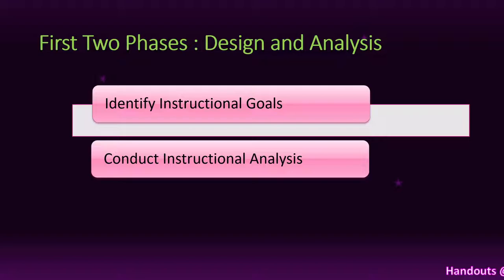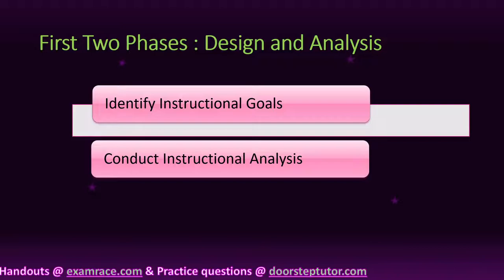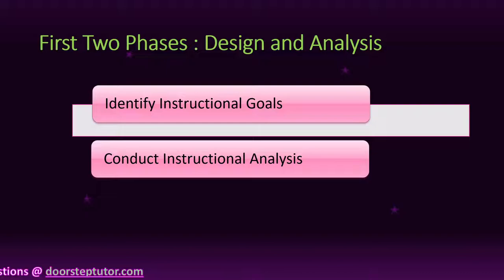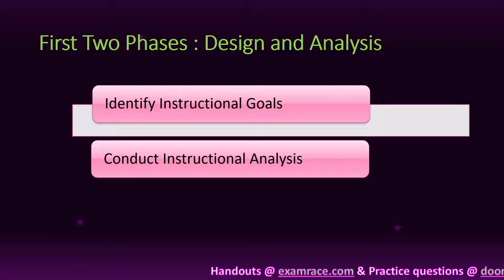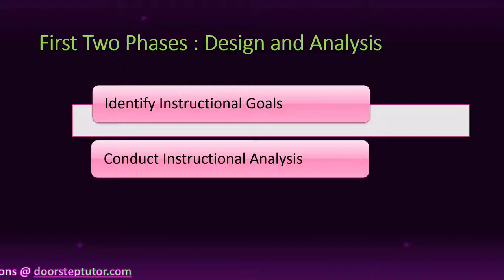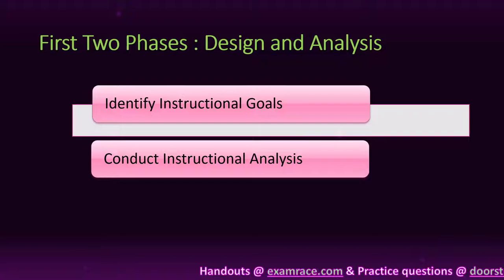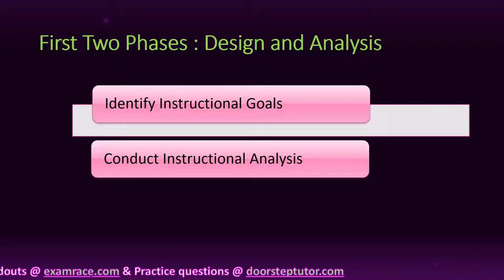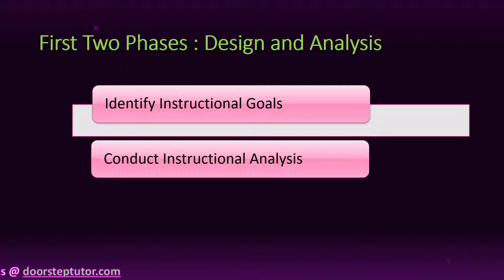The next step is to conduct instructional analysis. Here, the teacher identifies the performance gap between present performance and desired performance. This informs you what the learner needs to learn in order to perform. The teacher analyzes the instruction according to the goal and works to fulfill that gap. This process deals with all the skills required by the student to achieve the desirable goal.